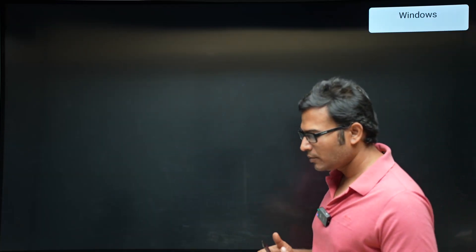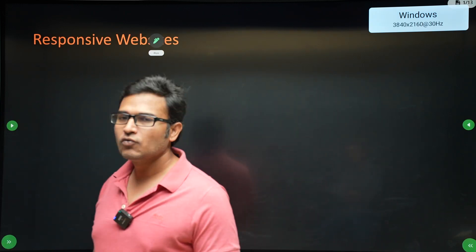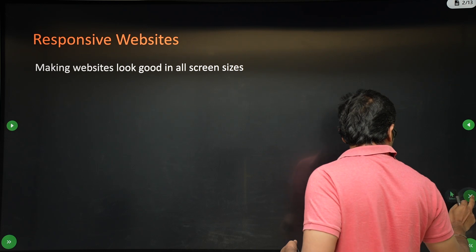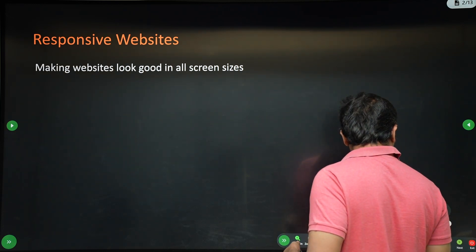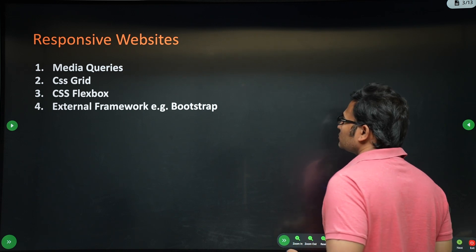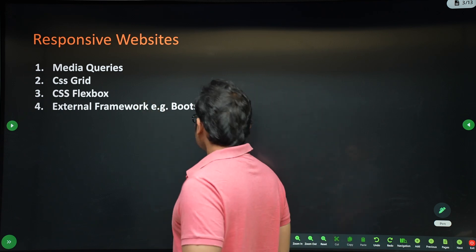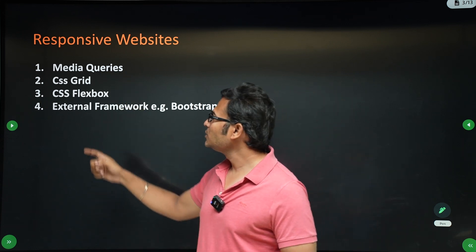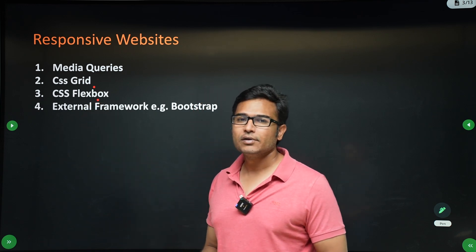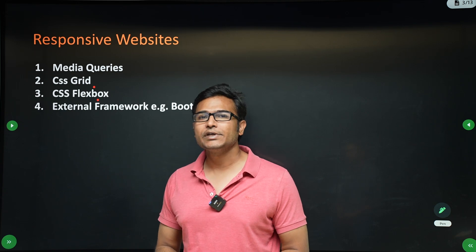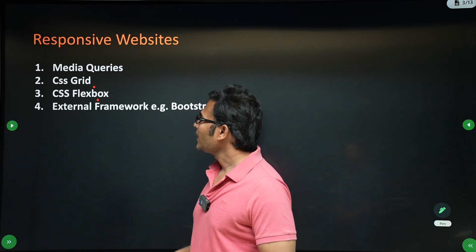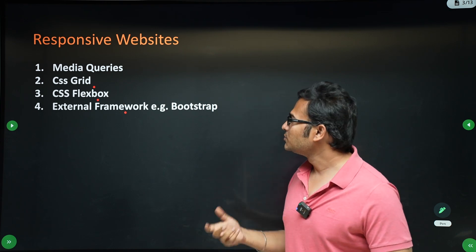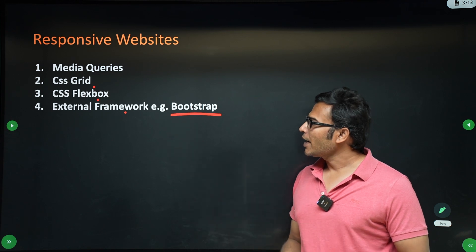How are you going to achieve responsiveness? There are mainly four ways. One way is by writing media queries. Another way is by using flexbox and grid, which are part of CSS so you can use them directly. You can also use external frameworks to build responsive websites — one such example is Bootstrap.